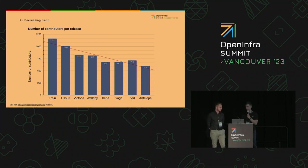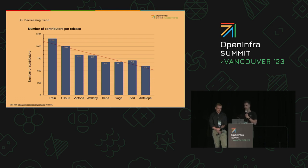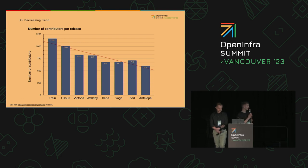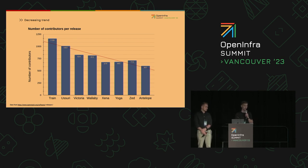Before we move to the main part of the presentation we would like to start with a couple of graphs which showcase the trend in active contributors in OpenStack over the last eight release cycles. All the data you will see here are taken either from Stackalytics or the official OpenStack website. In this first graph you can see that the number of active contributors is steadily decreasing. For example, if you take a look at the Train release cycle, the number of active contributors is almost double the number in the Antelope release cycle.